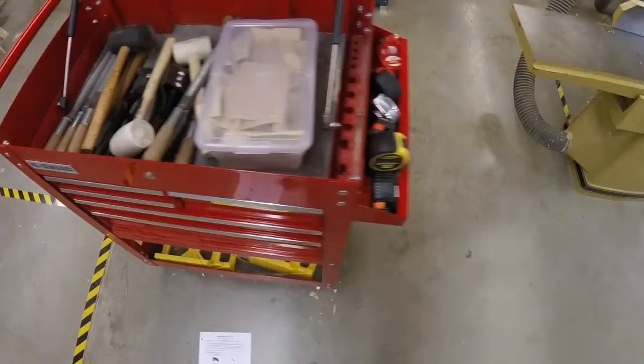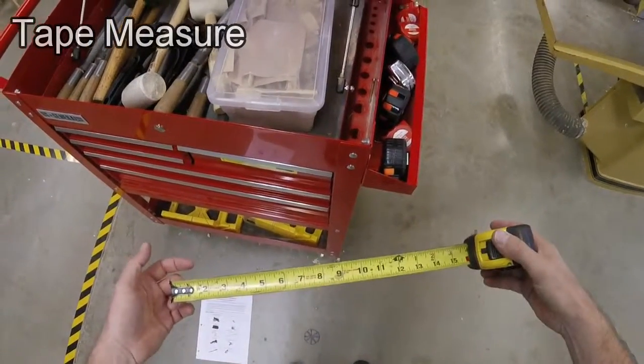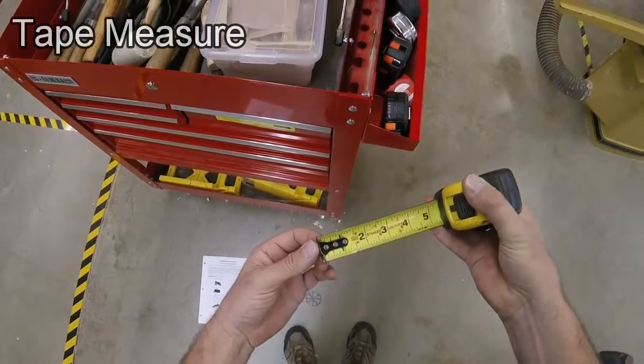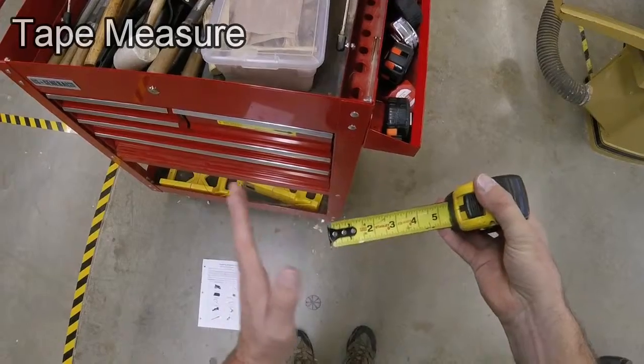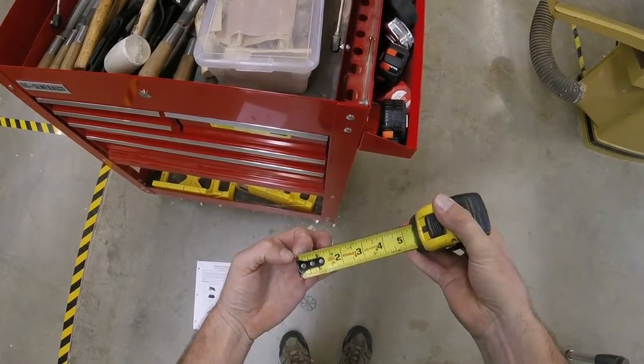The next item on the list is the tape measure. These live over here, and we'll use these to measure the length and the width of the board. It's important to note that on the tape measure, there's this metal band that slides back and forth. That's so that if I'm pushing or pulling, it's adjusting for the thickness of the tape measure.